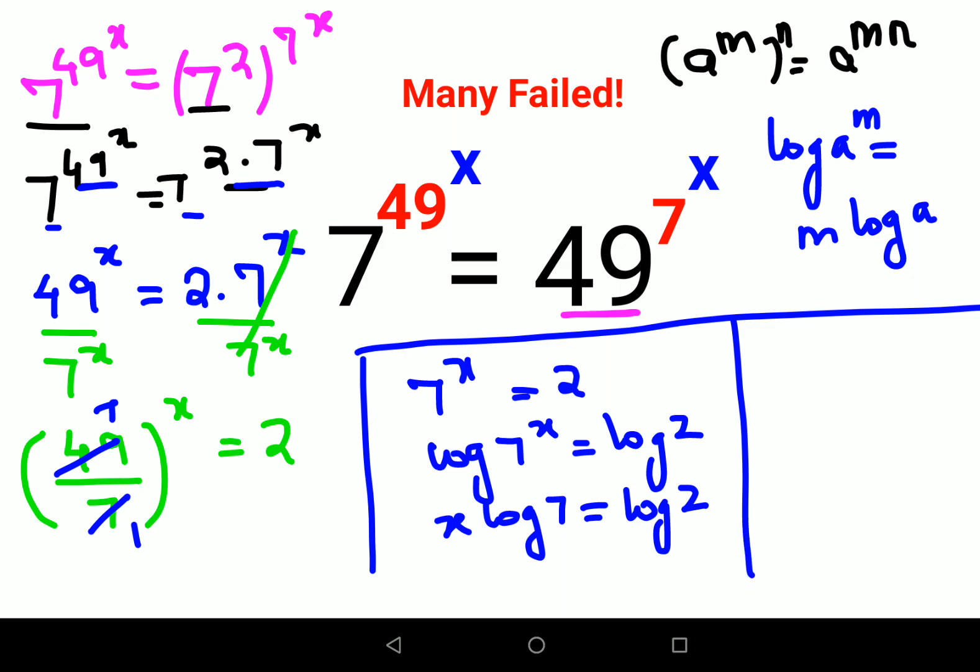So now in order to find the value of x, we will just divide both sides by log 7. So we will have x equals log 2 upon log 7. If they have given you the log book, then you can take the value from there, or you can just write this as log 2 upon log 7, or log of 2 to the base 7. Both of these values can be the answer for x.